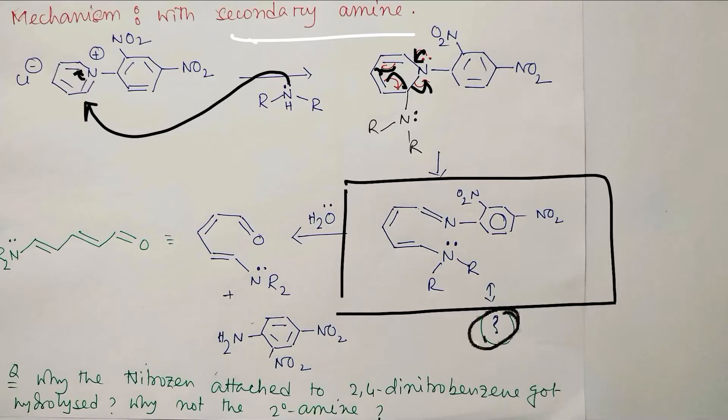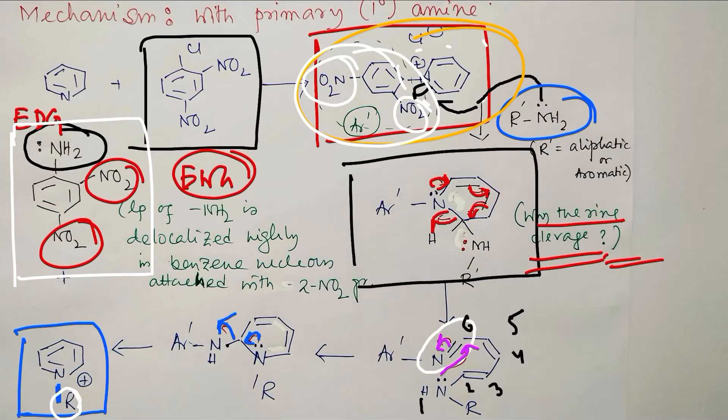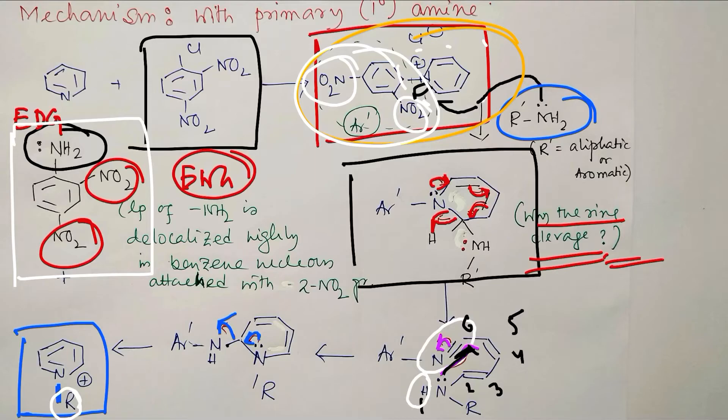Now a question: in the previous slide, see, in the next stage this lone pair attacked to the imine. Why? Because the lone pair has one proton such that after attack, the positive charge generated on the nitrogen could be neutralized by the release of proton, which is not possible here. Because in this case, two R groups are there. So reaction cannot proceed further. So during the work-up process, what will happen? This imine bond will be hydrolyzed.